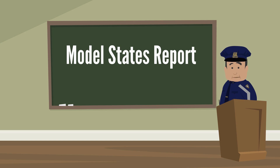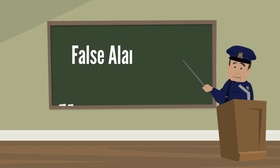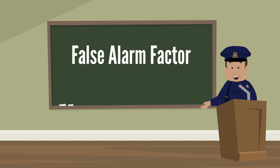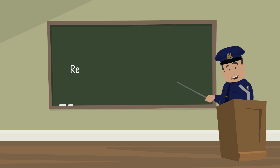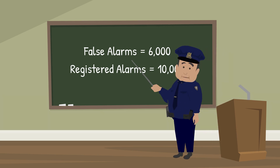From the Model States Report, we found there was a need for a uniform means of measuring false alarms and assessing the success of efforts to reduce them. This method is called the false alarm factor. To use this method, you first need to know how many monitored alarm systems are in your area, which is why our city now requires alarm systems to be registered. Once we had a count of monitored alarm systems, we began to track alarm dispatches.